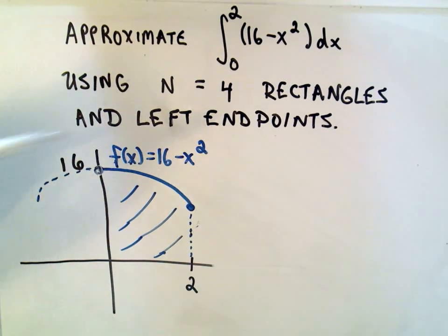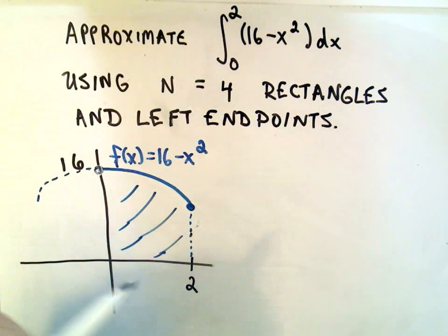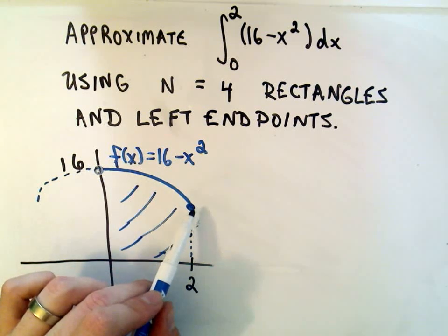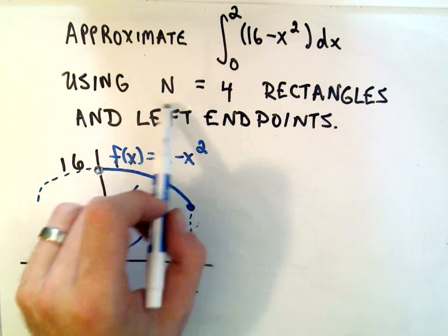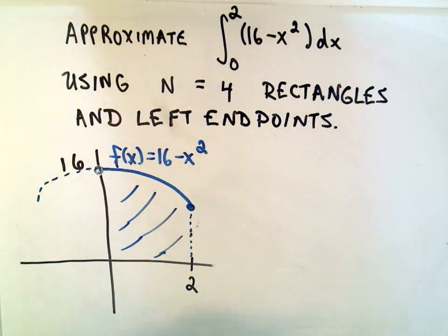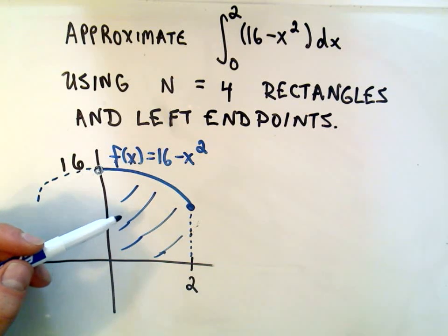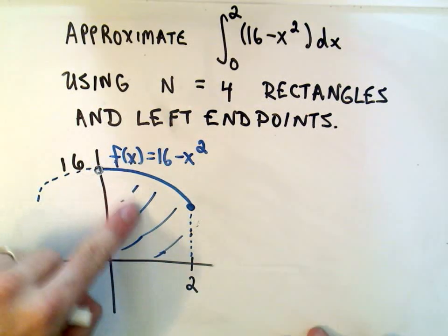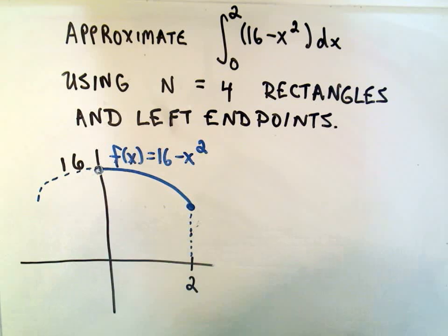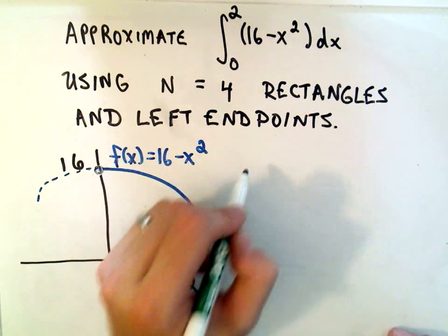So in this problem, I want to approximate the area, the definite integral from 0 to 2 of 16 minus x squared. Remember, 16 minus x squared is a parabola that's flipped upside down and has a y-intercept of 16. And I've just arbitrarily chosen four rectangles and left endpoints for my first example. So since we're calculating the definite integral from 0 to 2, we're talking about this blue shaded in area. The first thing we need to recognize is we're going to chop our rectangle up into four pieces. So what's the width of each piece?